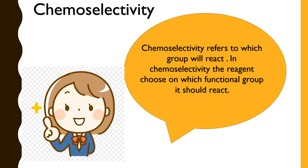The first selectivity — the answer to the first question, which functional group will react — is given by chemoselectivity. Chemoselectivity refers to which functional group will react. In chemoselectivity, the reagent chooses on which functional group it should react. We will understand chemoselectivity by looking at one example.